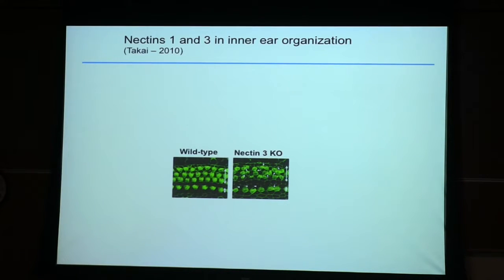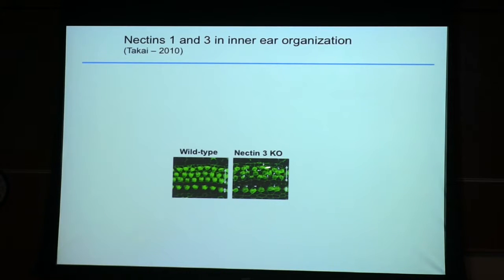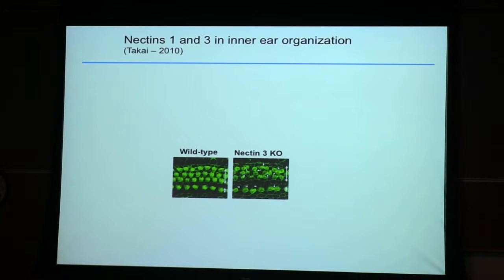At a cellular level, these are cells which contain either nectin-1 or nectin-3, and they're in the inner ear. You see they form a checkerboard pattern. When you knock out nectin-3, the checkerboard pattern basically goes away. This is exactly what you expect from heterophilic proteins — if you want to maximize favorable interactions at the molecular level, they're going to be heterophilic at the cellular level. The way to optimize this is through a checkerboard. So again, the properties of the individual proteins are reflected in the behavior of the cells that contain them.